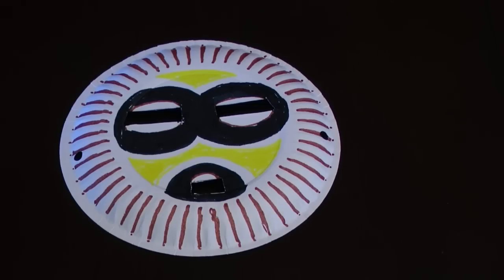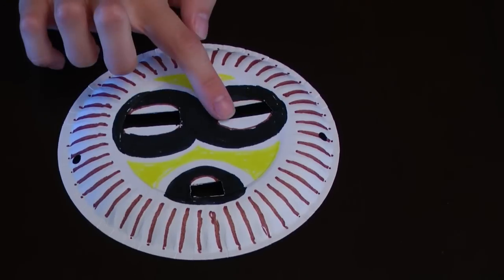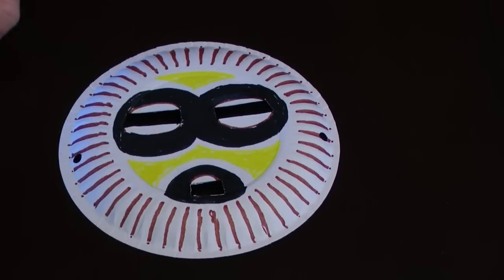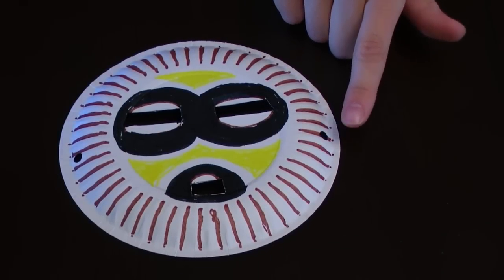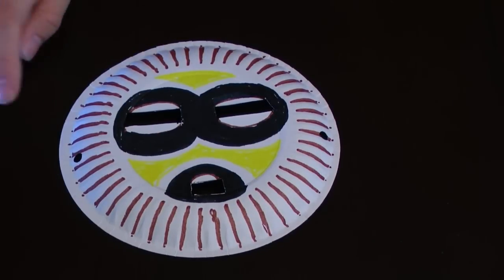The first step is to cut out the eyes and the mouth and to make the hole punches on the sides for the yarn that will go in there later and then decorate it and then stick the yarn on and the child will be able to wear it.